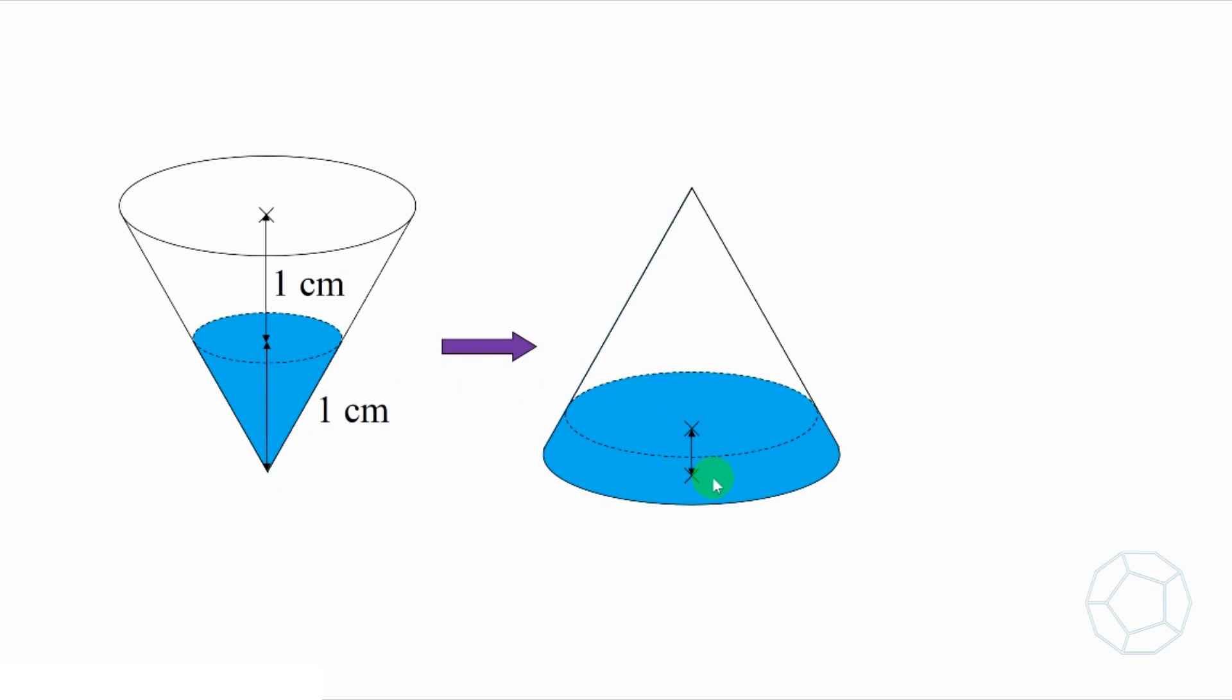First of all, you might wonder if there's enough information to work on it. Because we know that the volume of cone is equal to 1 over 3 times pi r square h, where r is the base radius. However, we have no idea about the radius in these two situations. Therefore, we need a completely different approach on that.